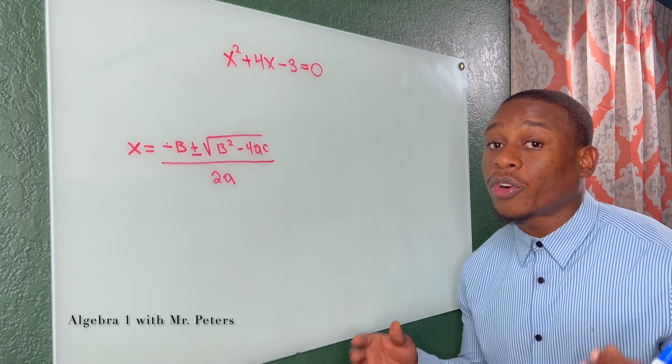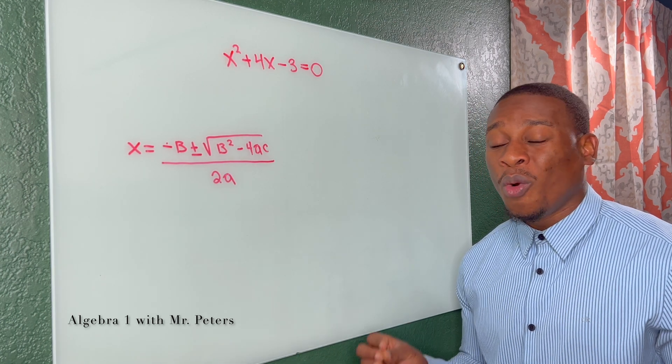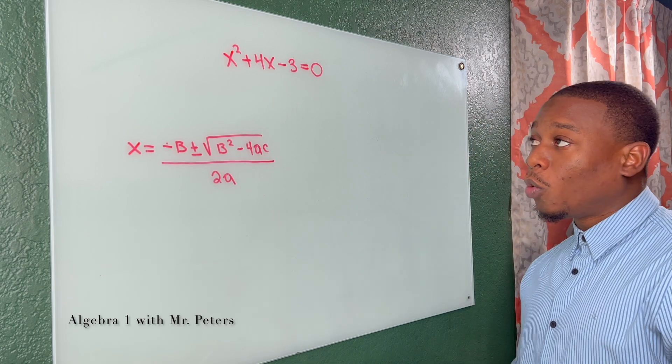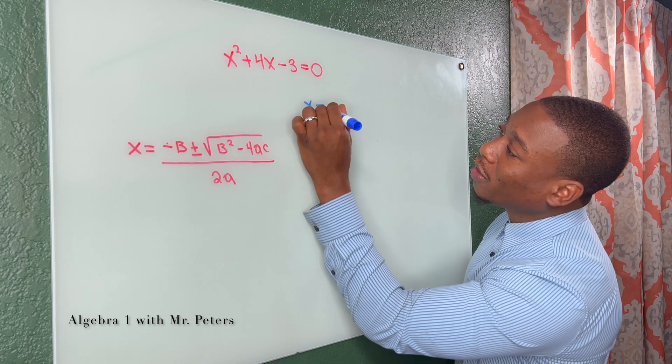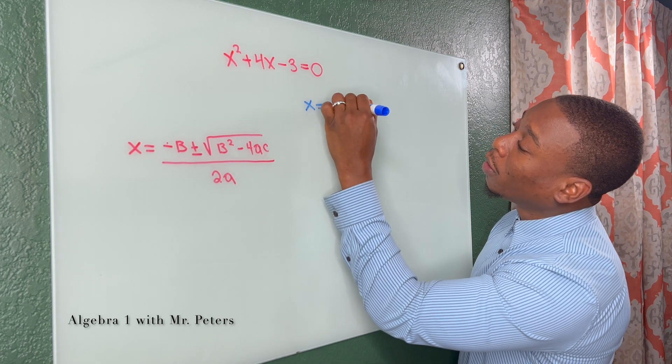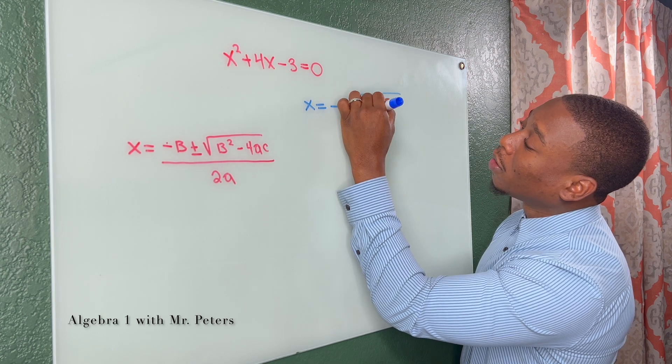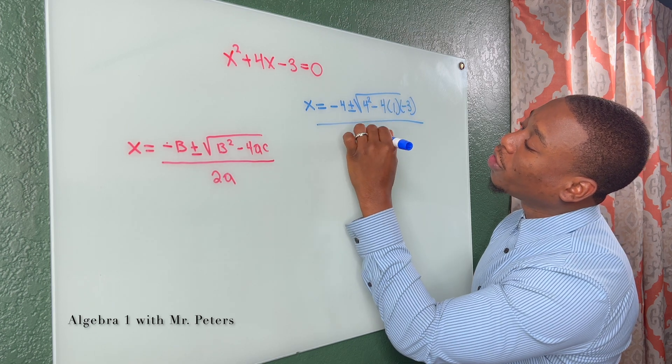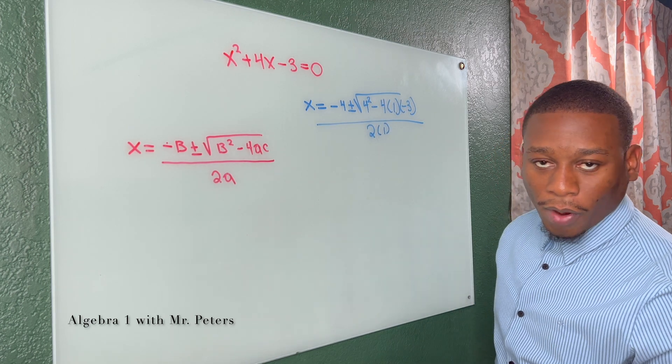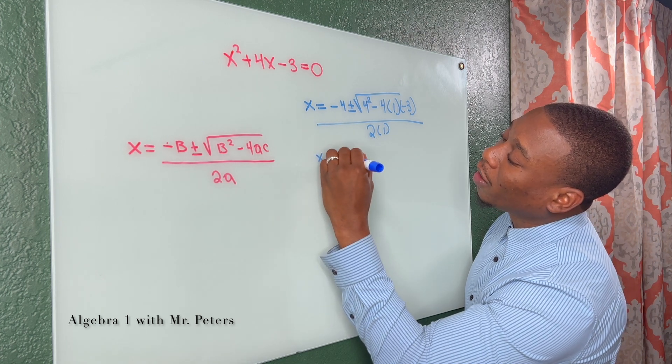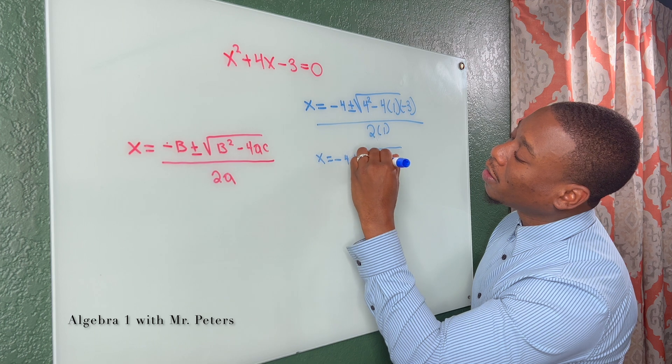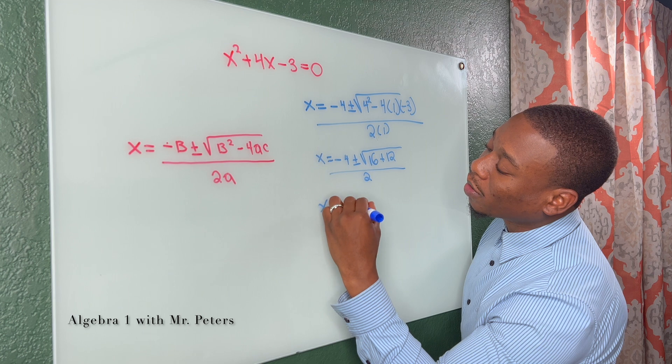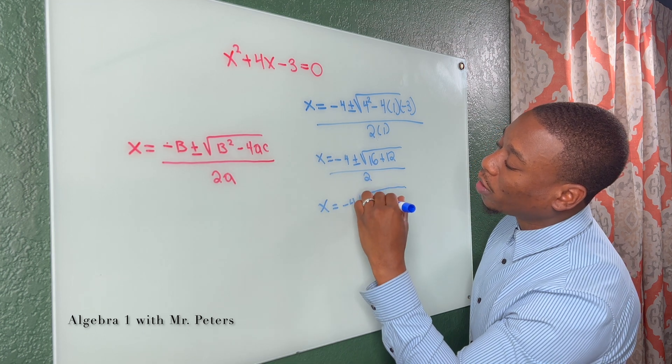Let's go to problem number two. So problem number two, this is what you're more than likely going to see. We're going to have a radical that is not going to break down to a perfect square. How should we go about solving it? Well, first let's set this up. So we have x is equal to negative four plus or minus four squared minus four times one times negative three all over two times one. So as we simplify, we have x is equal to negative four plus or minus 16 plus 12 all over two. Now we simplify some more and what we're going to get under the radical is 28.